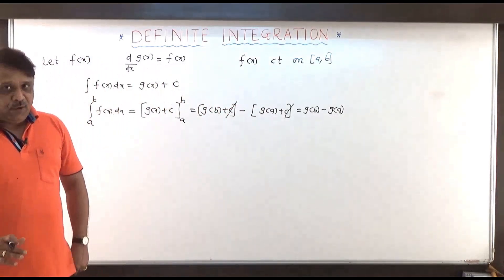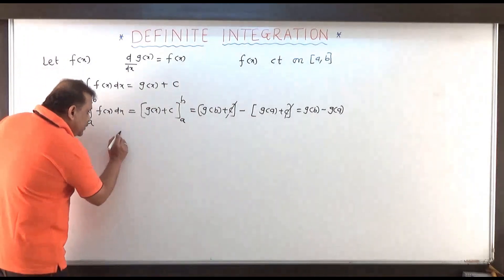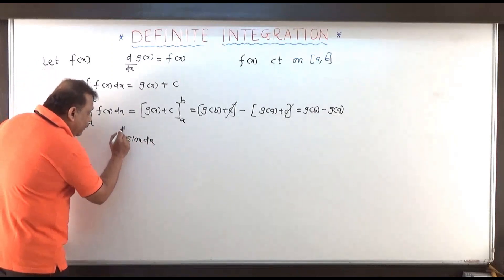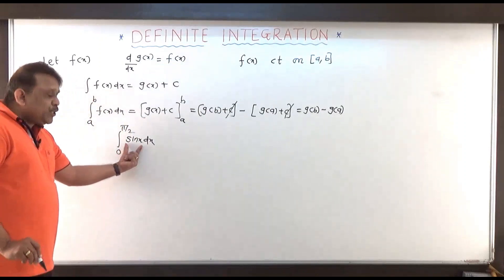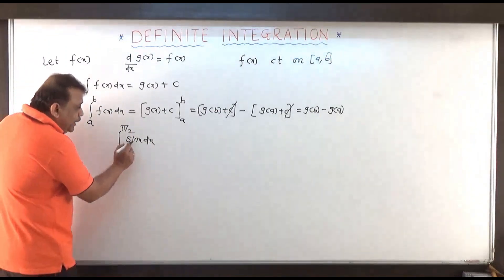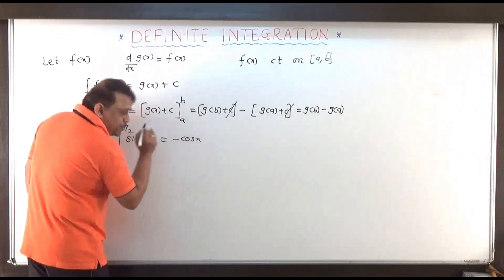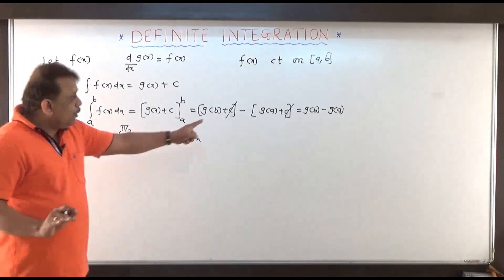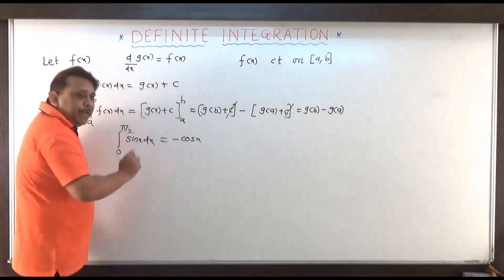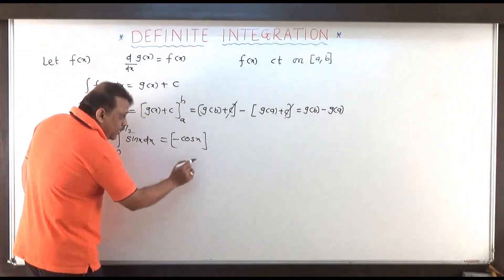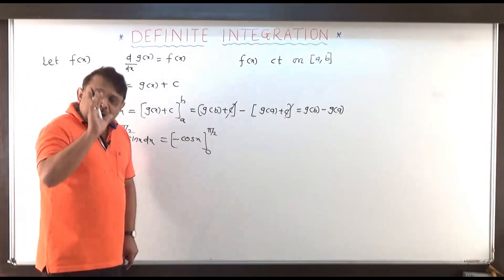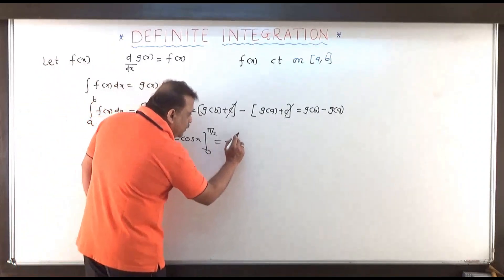For example, suppose I consider the integral of sin x dx from 0 to pi by 2. We know that sin x is continuous on the closed interval 0 to pi by 2, so let us evaluate this. We know that the integral of sin x is minus cos x. We will not write c here because the constant of integration gets eliminated in the process. We write minus cos x and put the bracket with lower limit 0 and upper limit pi by 2.